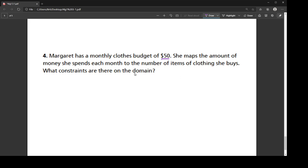Our domain value is the amount of money she's spending. Our constraint would be from zero to 50, because she can't spend less than zero dollars on clothes. She's not making money off of her clothes. But she also can't spend more than 50 bucks because she has that budget.